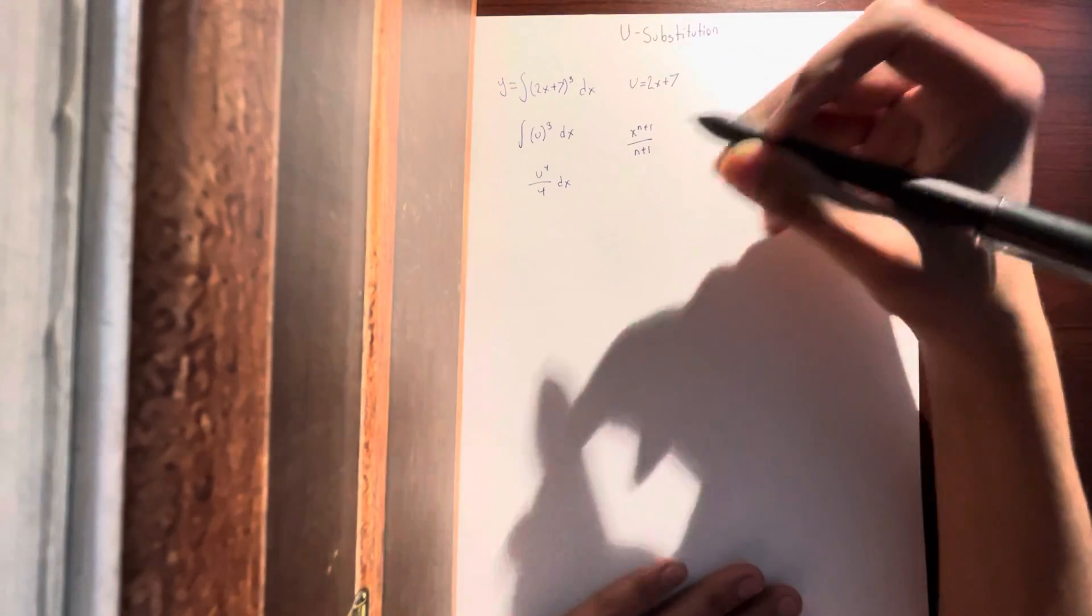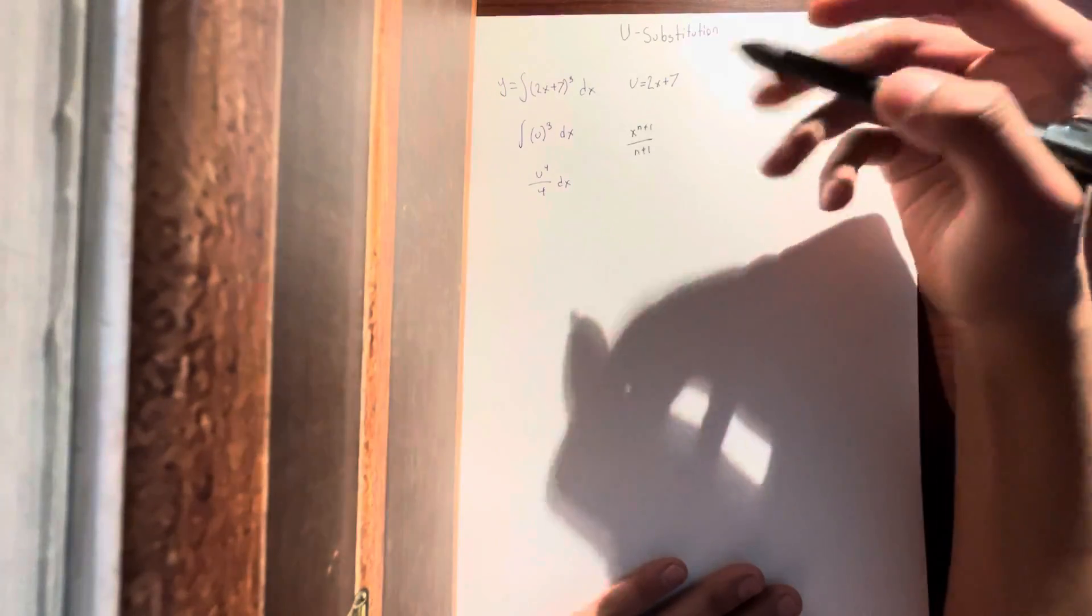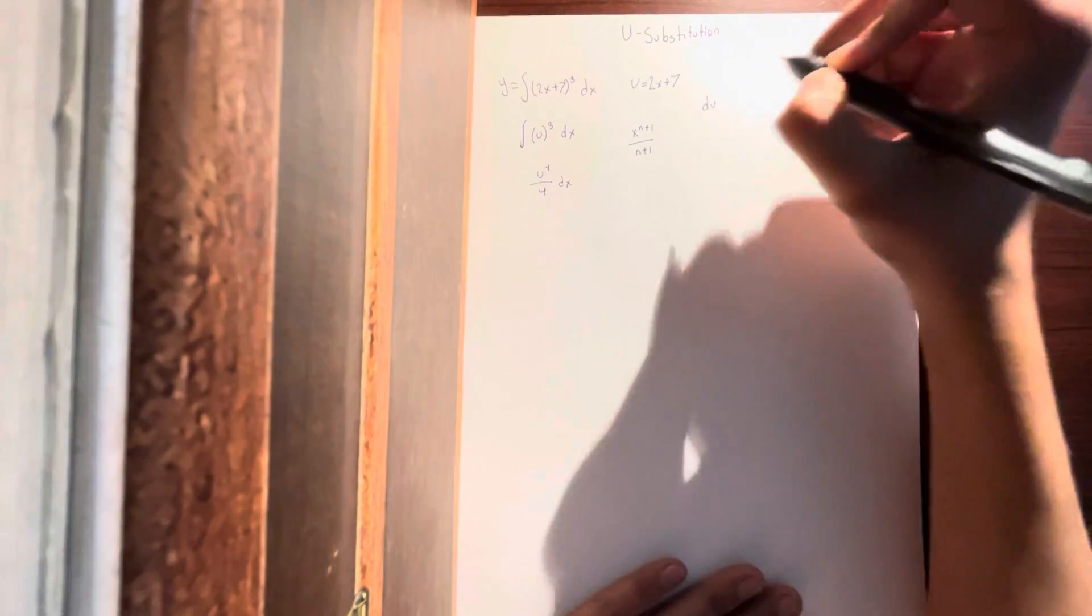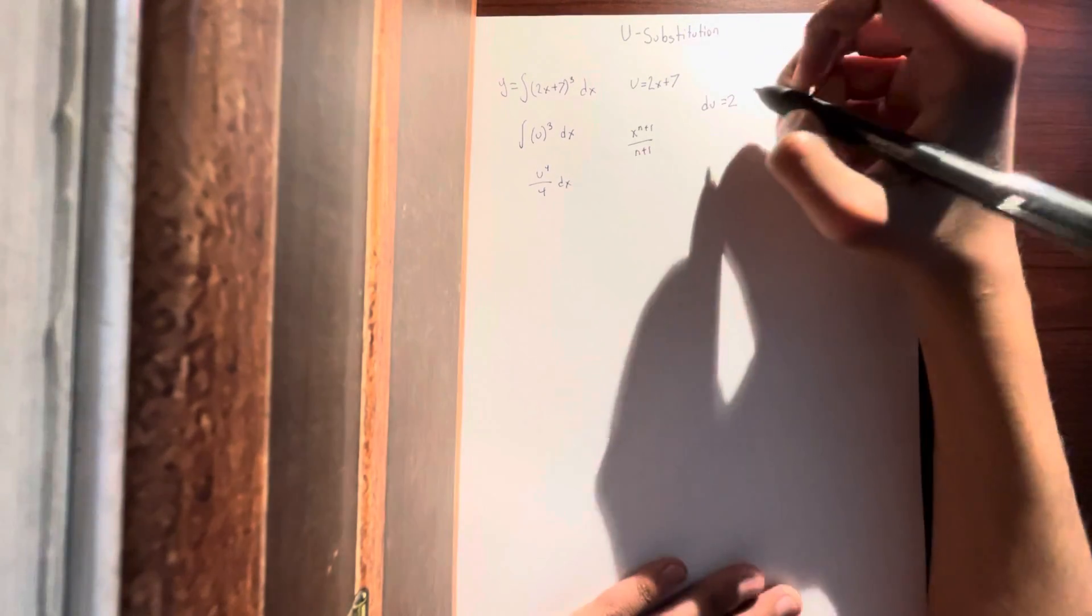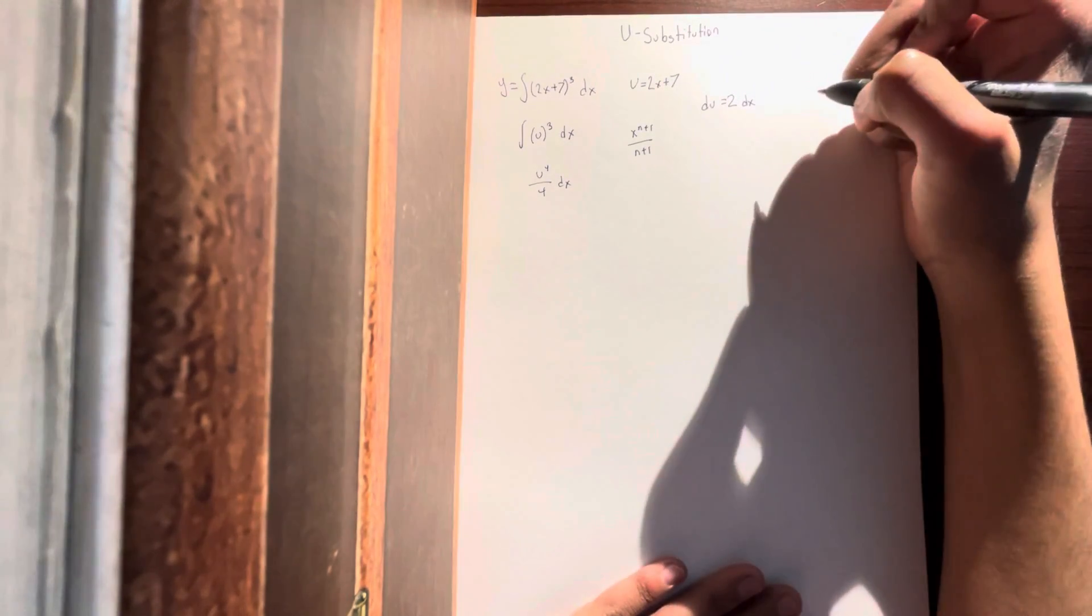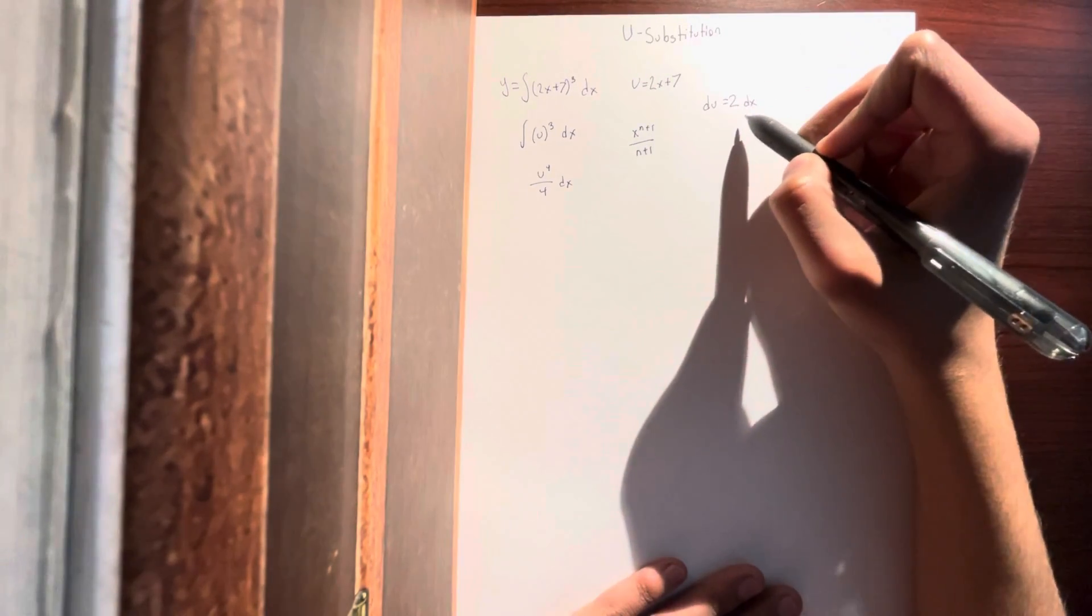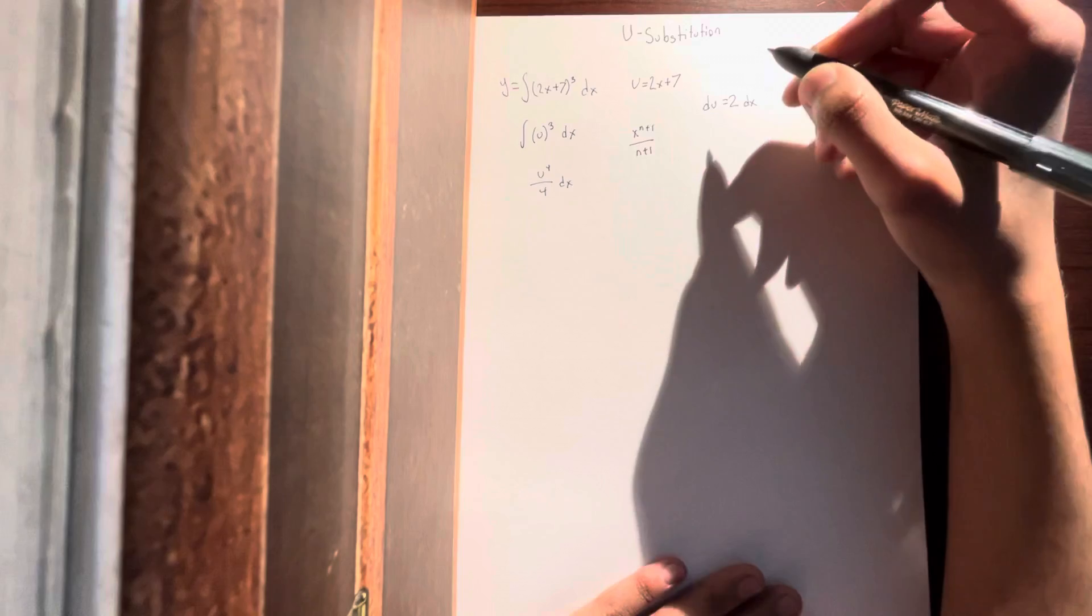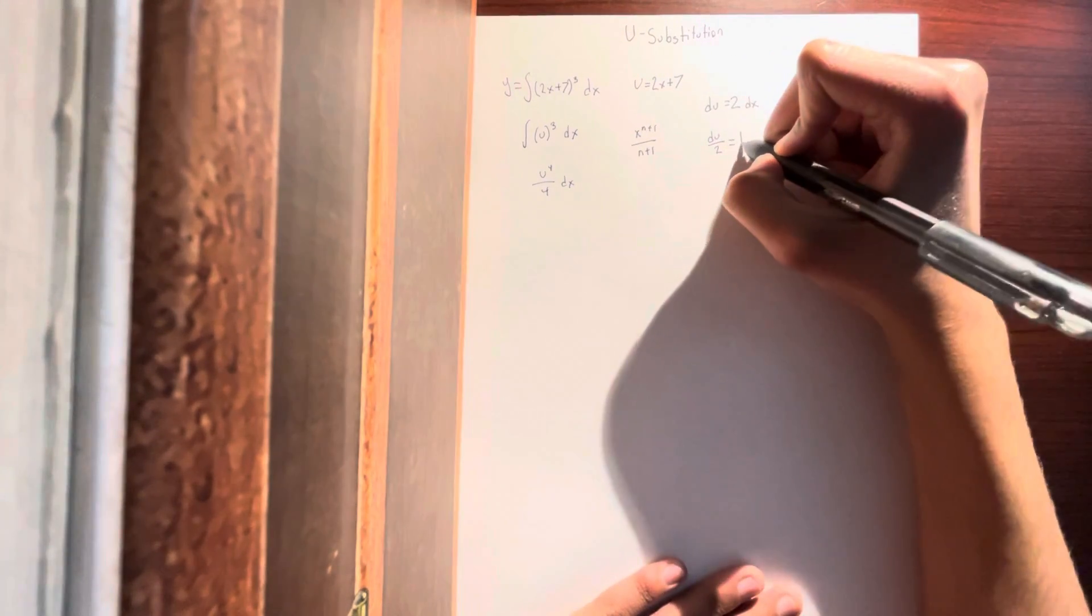Now what you have to do is find a way to remove dx and get du. So let's find du. du would be the derivative of u, so du = 2dx. Then you divide both sides by 2 to make dx = du/2.